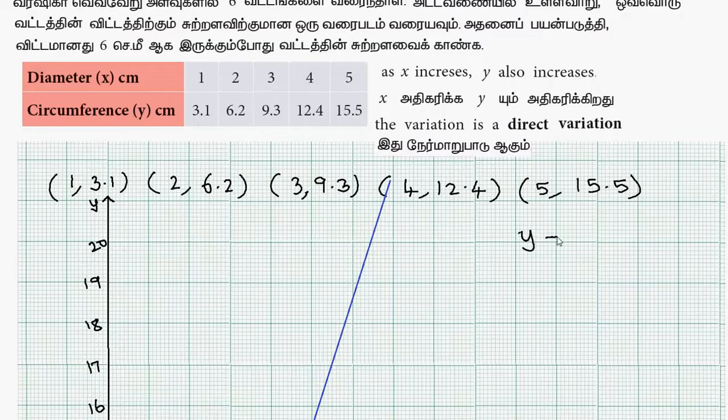So y is equal to kx. And this is the first point, so substitute the values. x is equal to 1, y is equal to 3.1. So 3.1 equals k times 1.